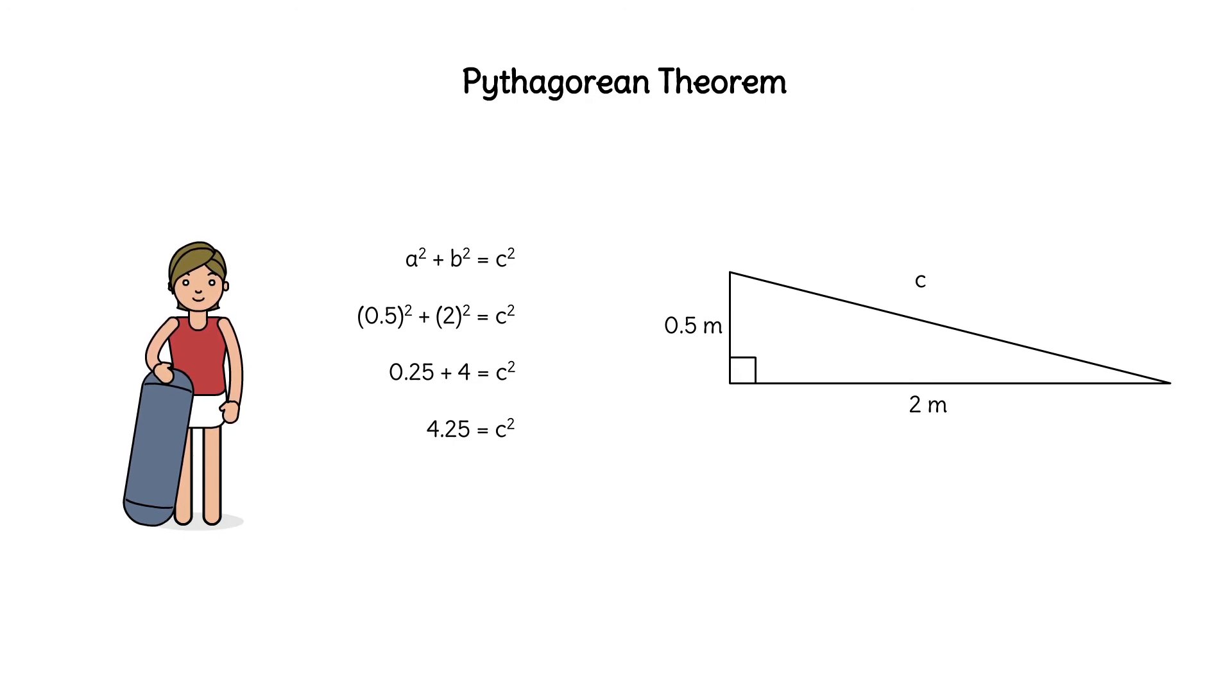How do we solve for c? Take the square root of 4.25 and we have c is approximately 2.06 meters. Rosalina cuts the plywood and completes her ramp.